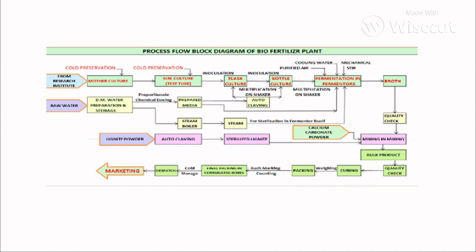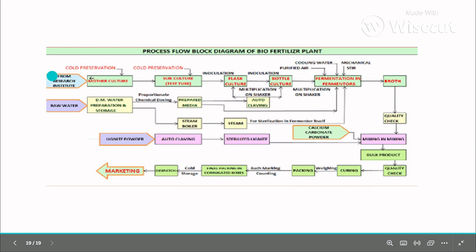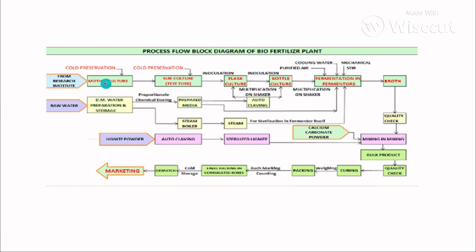The production of biofertilizers at a larger scale involves both upstream and downstream processes. The upstream process goes from mother culture to flask, then fermentation, then the broth. The downstream process includes quality monitoring, centrifugation, mixing with suitable media for application, developing it into product form, and finally marketing it.